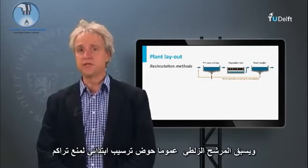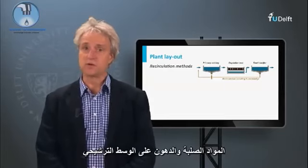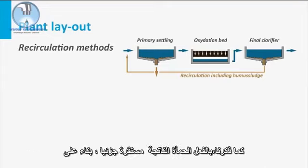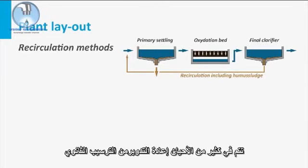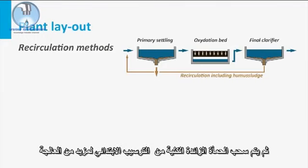A trickling filter is generally preceded by a primary clarifier to prevent the accumulation of solids and fats onto the filter bed. Excess sludge leaves the filter with the effluent and is retained in a secondary clarifier. As mentioned, the produced sludge is already partly stabilized, dependent on the applied BOD loading rate. From the secondary clarifier, often recycling is performed by pumping the secondary sludge with the nitrified effluent to the primary clarifier. The overall excess sludge is then withdrawn from the primary clarifier for further treatment.